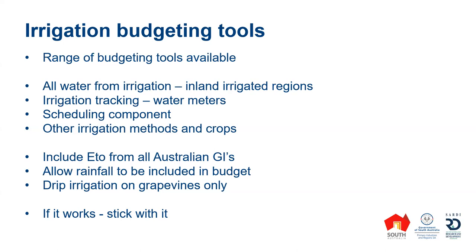The tool we're talking about here includes evapotranspiration data from all Australian geographic indicators, so it should be applicable across a range of Australian wine regions. It allows rainfall to be included in the budget — as many of our regions don't rely solely on irrigation and have quite a large component of rainfall. It's targeted at drip irrigation of grapevines only. But if you have an existing tool you're using and it's working for you, I would recommend that you stick with it.